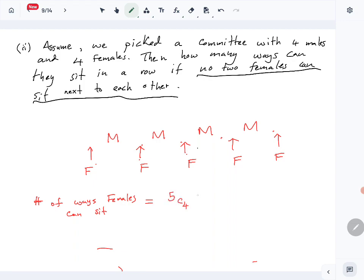That's 5C4. Then in those four positions, the females can be in any order, so 4 factorial. We get 5 times 4 factorial, which is 5 factorial, so there are 120 ways for females to sit.